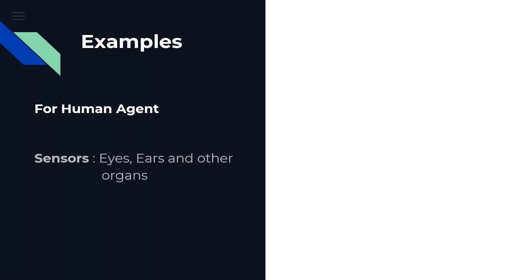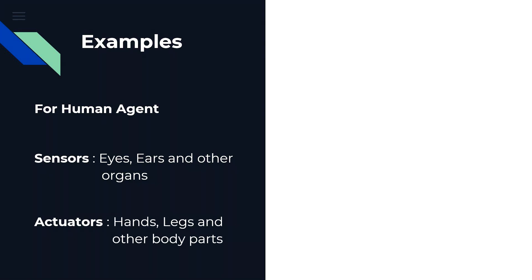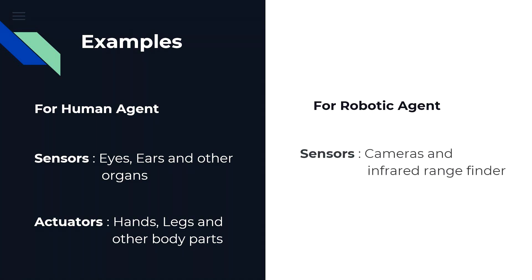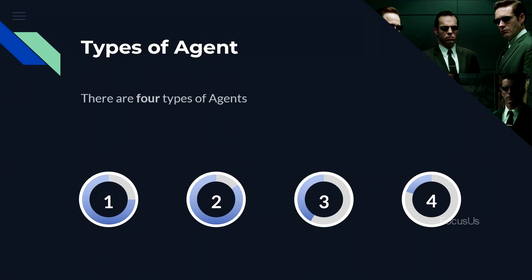Let's look at some examples to be more clear. For a human agent, sensors can be ears, eyes, and other organs from which information is gathered from the environment, whereas actuators can be hands, legs, and other body parts through which tasks are performed. Similarly, for a robotic agent, sensors can be cameras and infrared range finders, whereas actuators can be different movable motors.